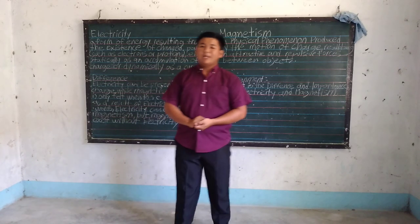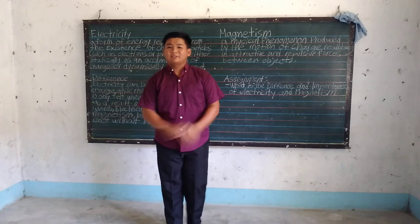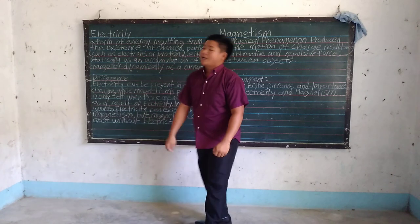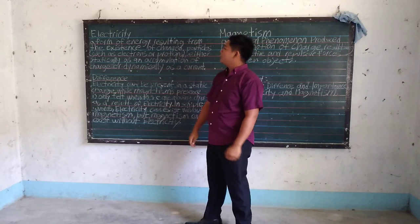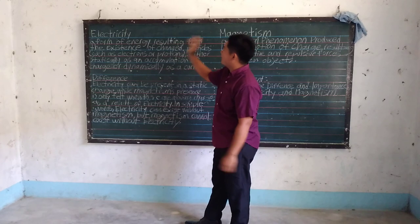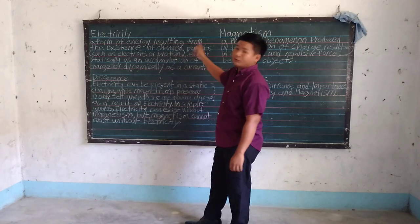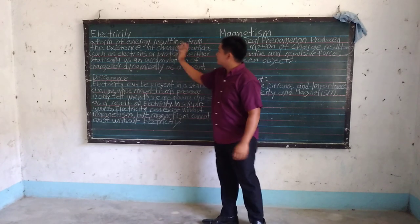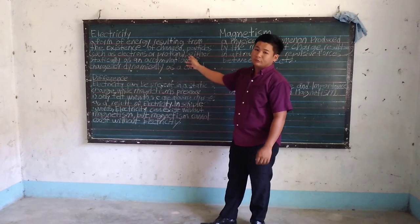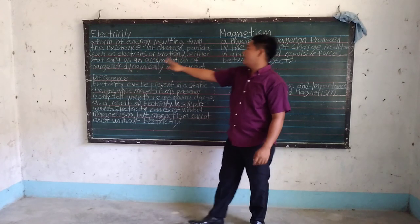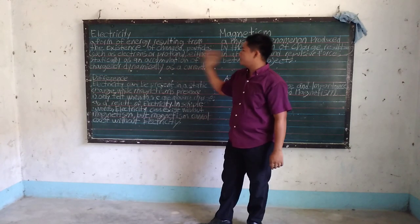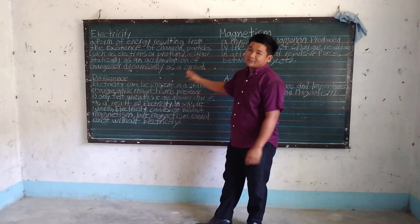Good day, class! Our lesson for today is Electricity and Magnetism. First, we are going to define electricity. Electricity is a form of energy resulting from the existence of charged particles such as electrons or protons, either statically as an accumulation of charge or dynamically as a current.